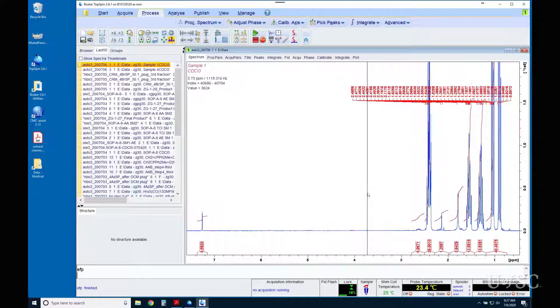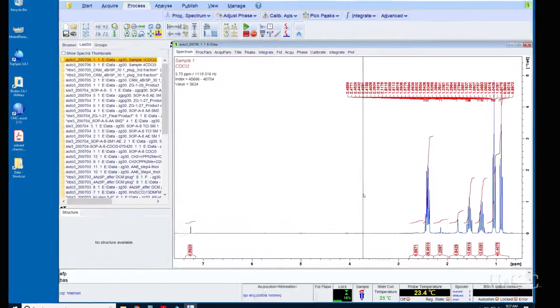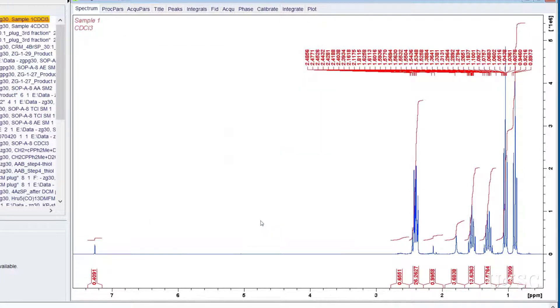For more accurate integrals you should then correct the baseline with the BAS command. Type BAS in the command line and after you hit return a dialog box will open. Make sure the auto correct baseline using polynomial radio button is selected. All other parameters can be left with their defaults.